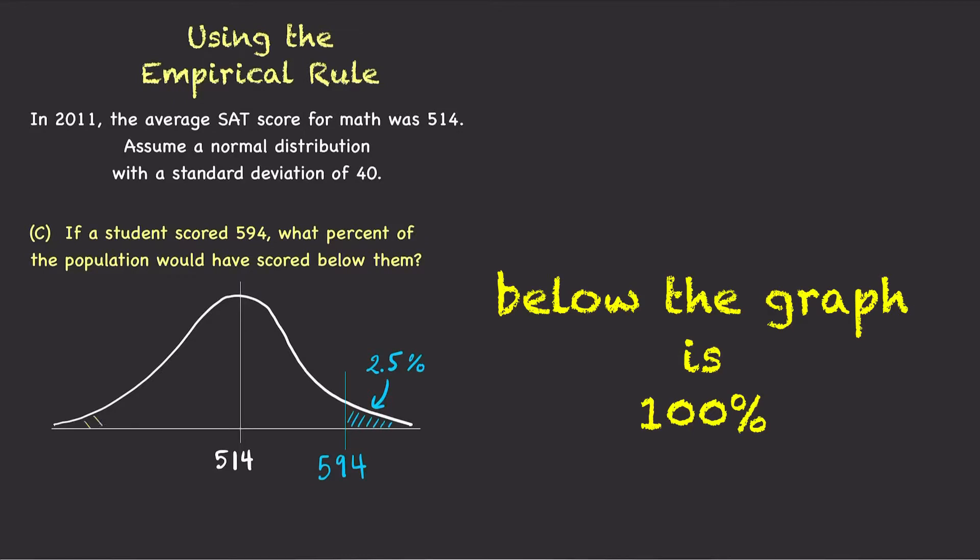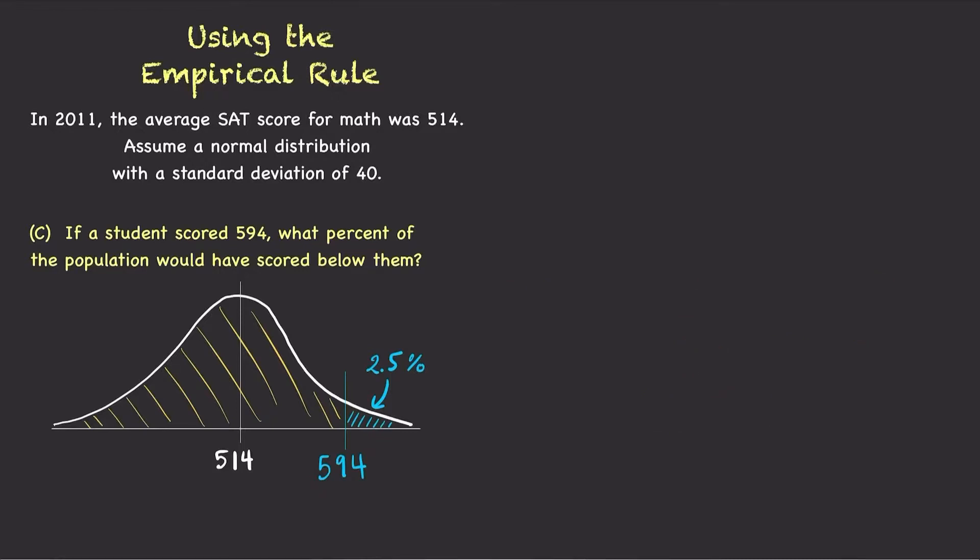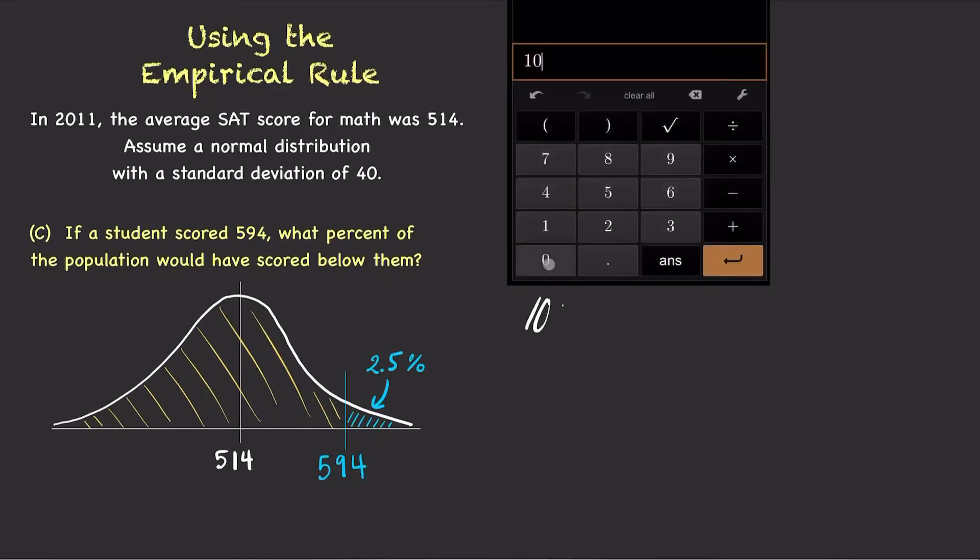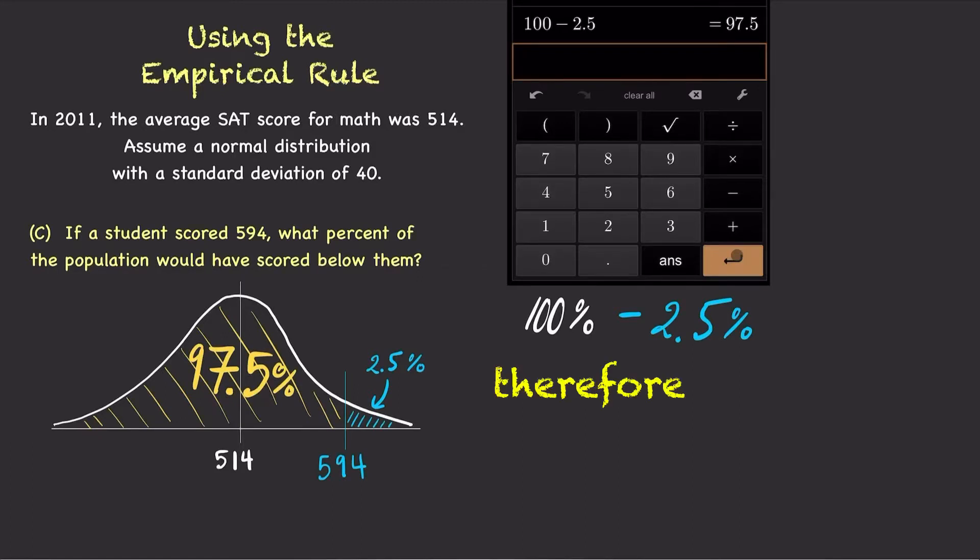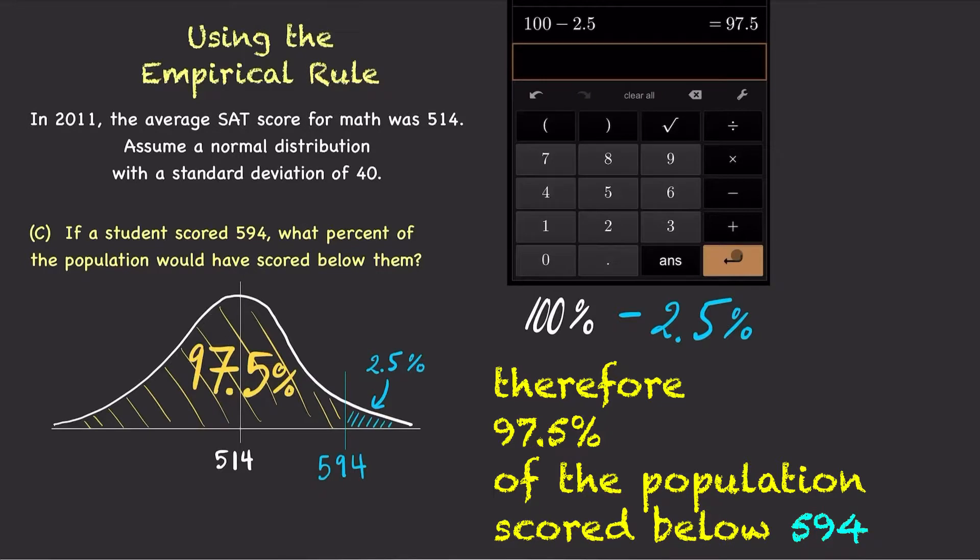Since the bell curve contains 100% of the population and 2.5% is above 594, simply take 100% minus 2.5%, which is 97.5%. Therefore, 97.5% of the population scored below 594.